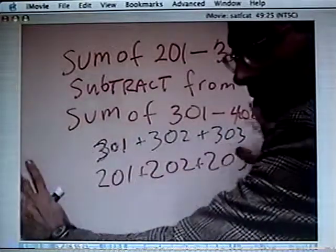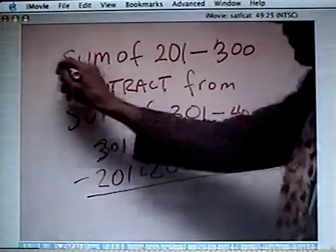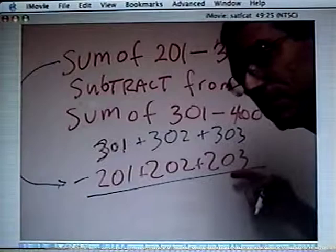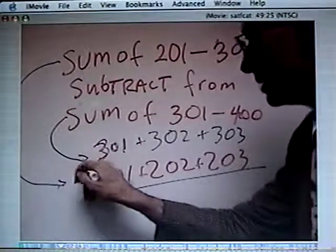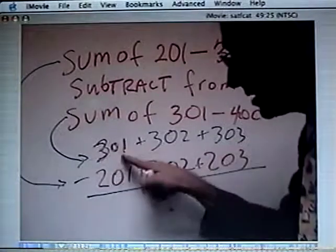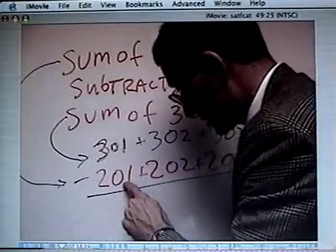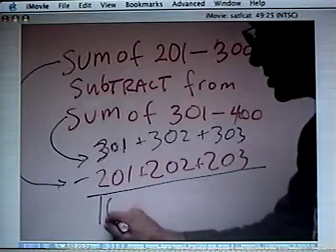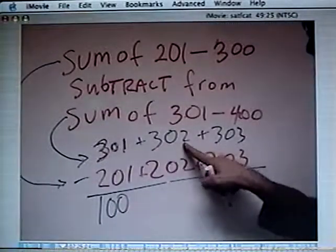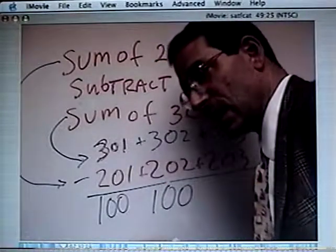If you lay it out, you can instantly see. They're asking, this is the first one at the bottom. 201 plus 202 plus 203. We're subtracting the sum of 301 plus 302 plus 303. If I just do the first one, subtracting the sum of 201, the first difference is 100. If I do 302 minus 202, the difference is 100.